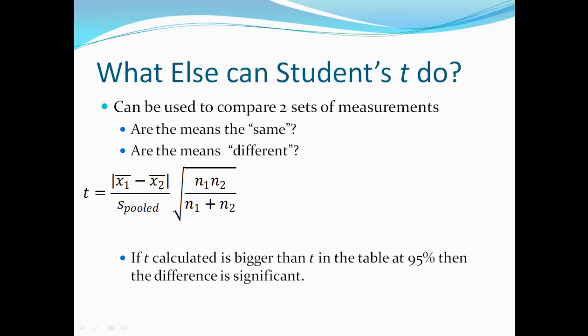It's a bunch of letters, but we know all of these values already. Now s pooled, I'm showing to you right here. And again, you see all of the different variables you use here are the variables you know already, or you would know because the problem would give you all of this information. So this is not a hard equation. It's just you have to have all the pieces of information to be able to plug into here. And how do you know if they're the same or not? Well, if the t that you calculate is bigger than the t that's in the table at 95%, then the difference is significant. So that means that the means are not the same, and you should be wary of comparing those two data sets.